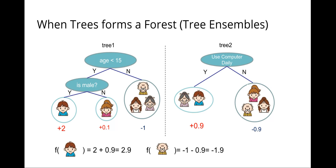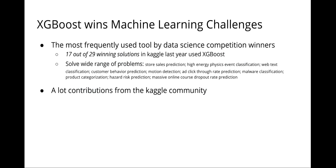XGBoost learns a tree ensemble model that combines all the predictions together to form a strong prediction. It has been used by more than half of winning solutions in Kaggle, spanning across multiple problems, including store sales prediction and high energy physics event classification, et cetera.